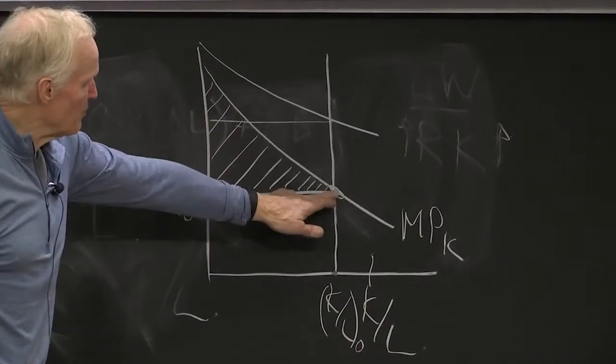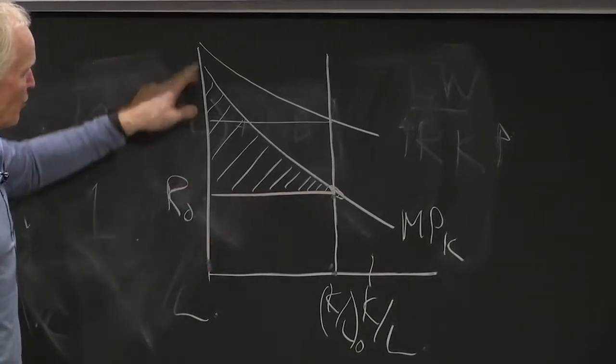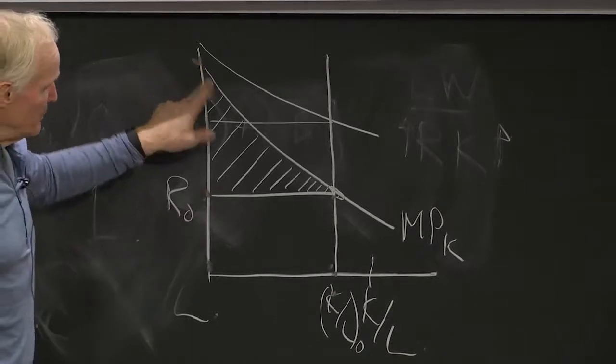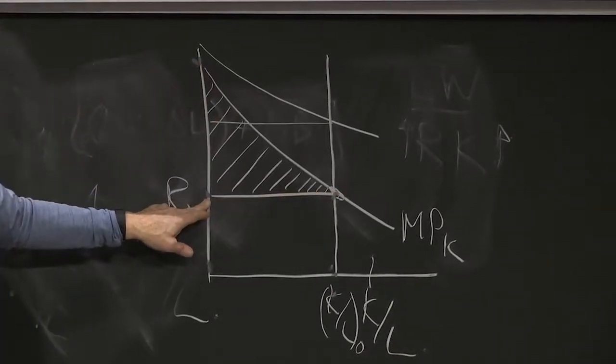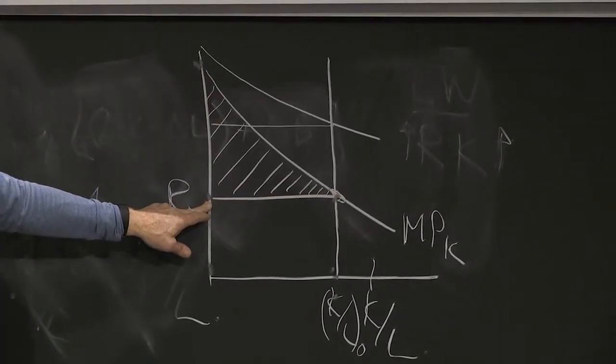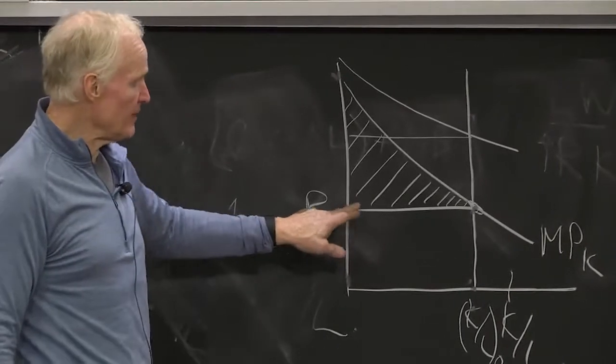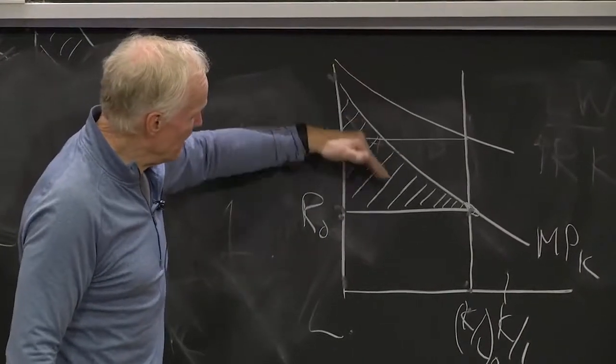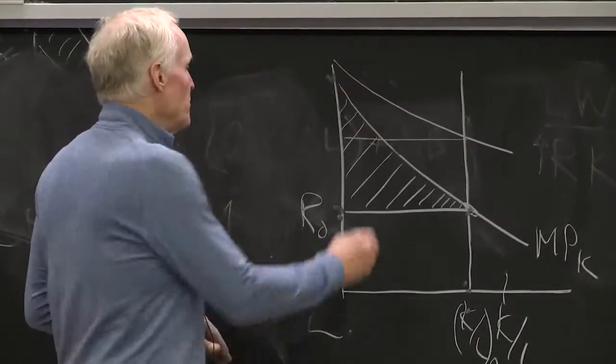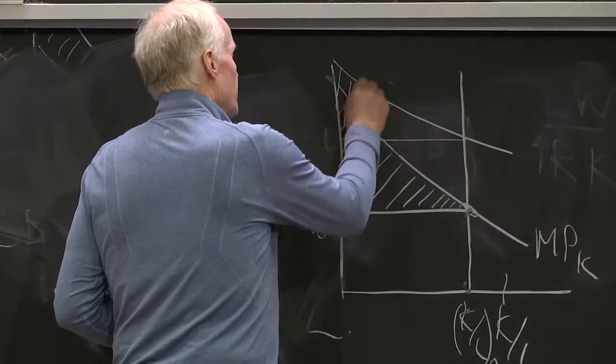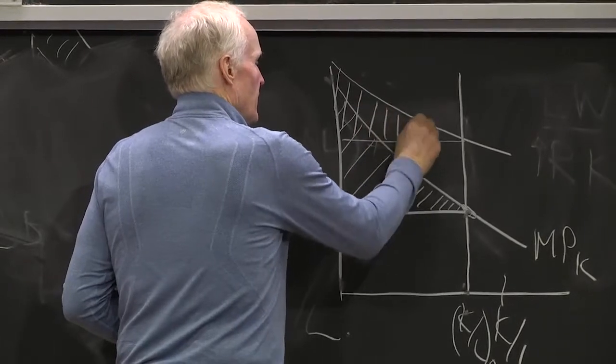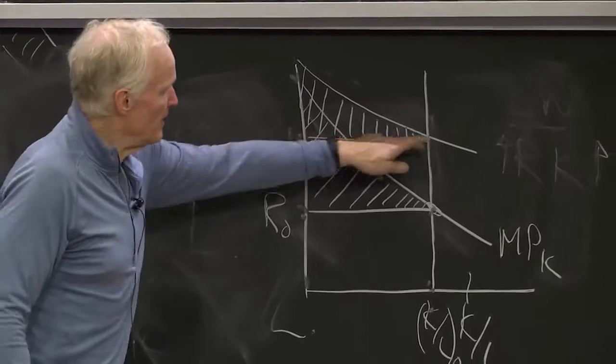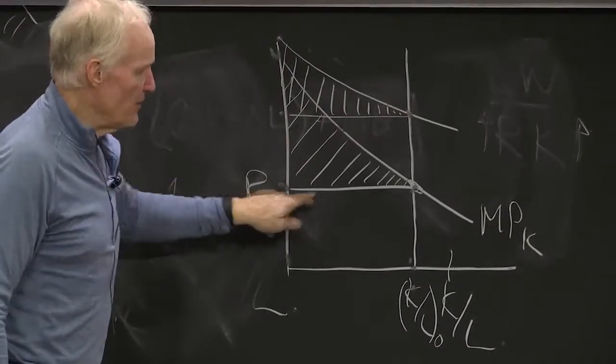That's what capital was earning. So if capital earned the rectangle, total product is the area under the curve. So labor must be getting the triangle. So what would happen to the income of labor in this world? There's technical progress because the area under the curve is up, but actually workers are worse off.